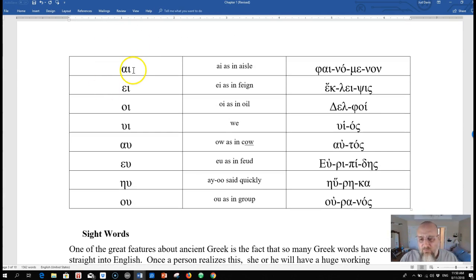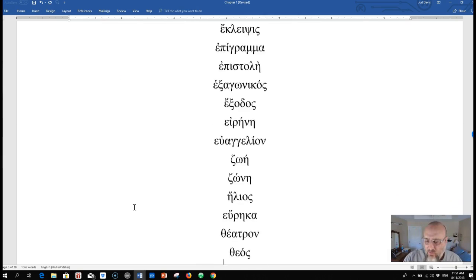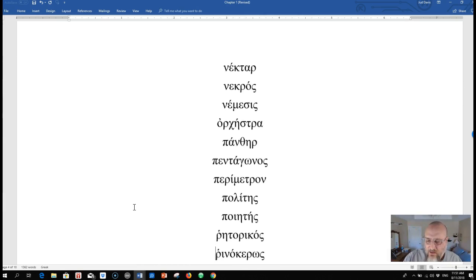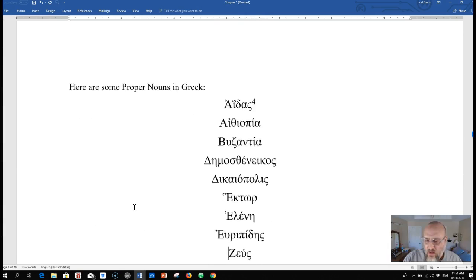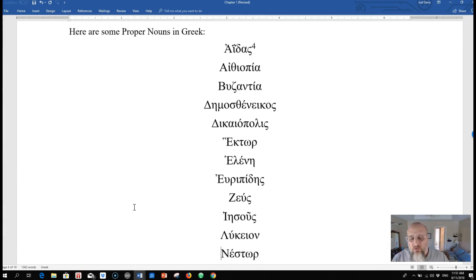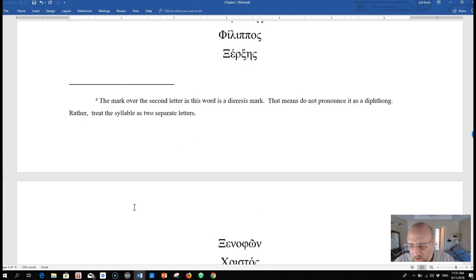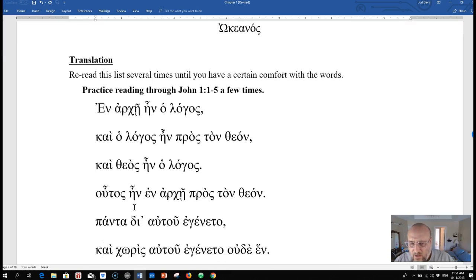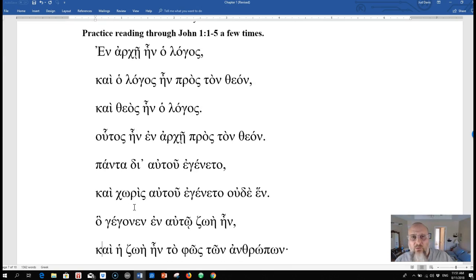We did the diphthongs: ai, ei, oi, ui - that's kind of a different one - so this is ui, ou, au, eu, hu. The sight words, I would read through those again quickly. I would read through the proper names. It'll just help solidify things.